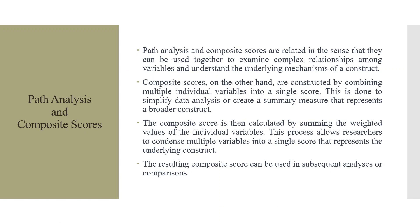Path analysis and composite scores are related in the sense that they can be used together to examine complex relationships among variables and understand the underlying mechanisms of a construct. Composite scores are constructed by combining multiple individual variables into a single score, done to simplify data analysis or create a summary measure representing a broader construct. The composite score is calculated by summing the weighted values of the individual variables, allowing researchers to condense multiple variables into a single score.